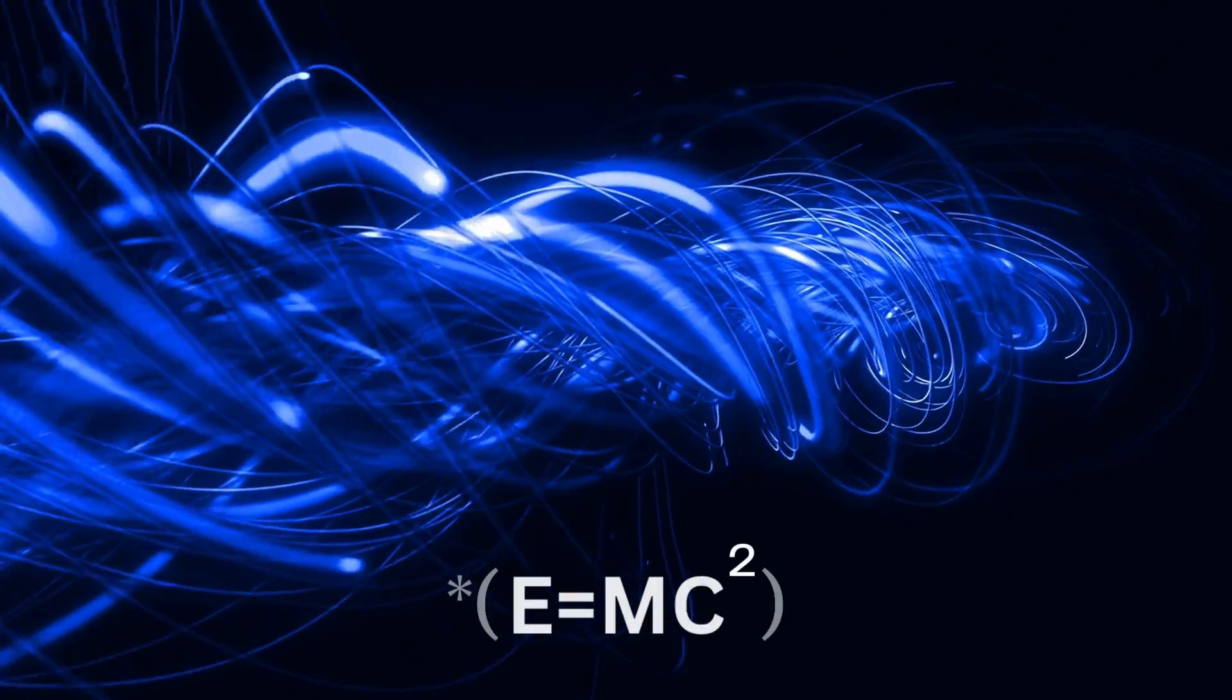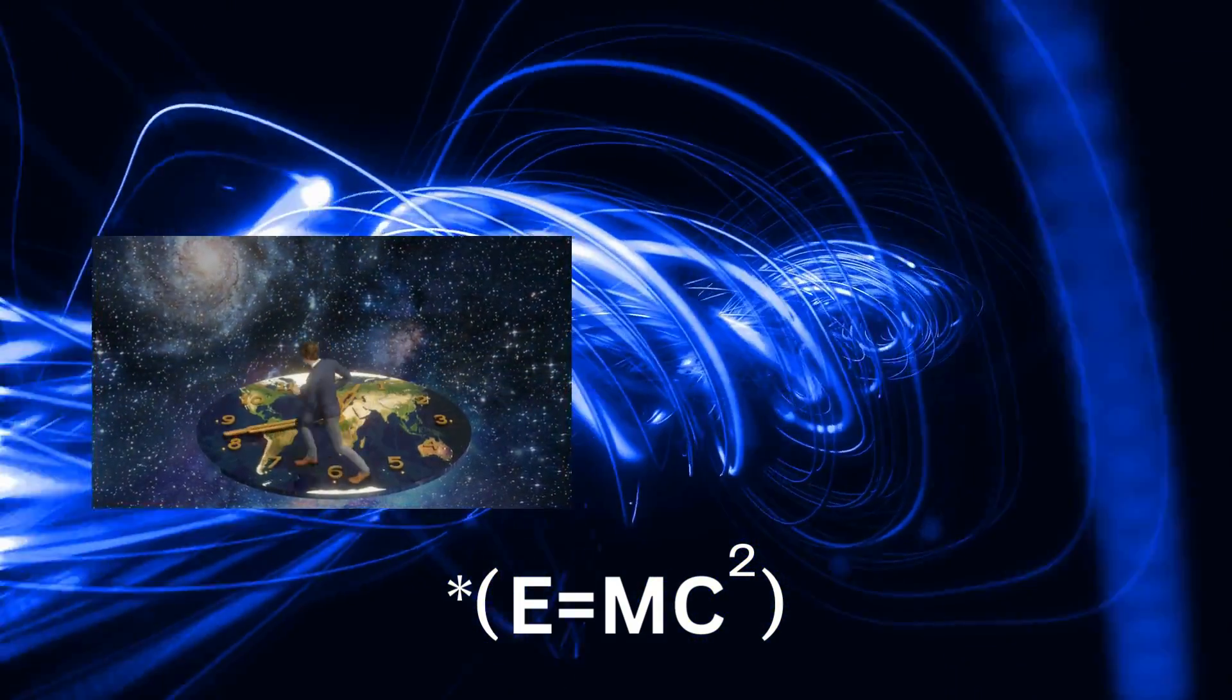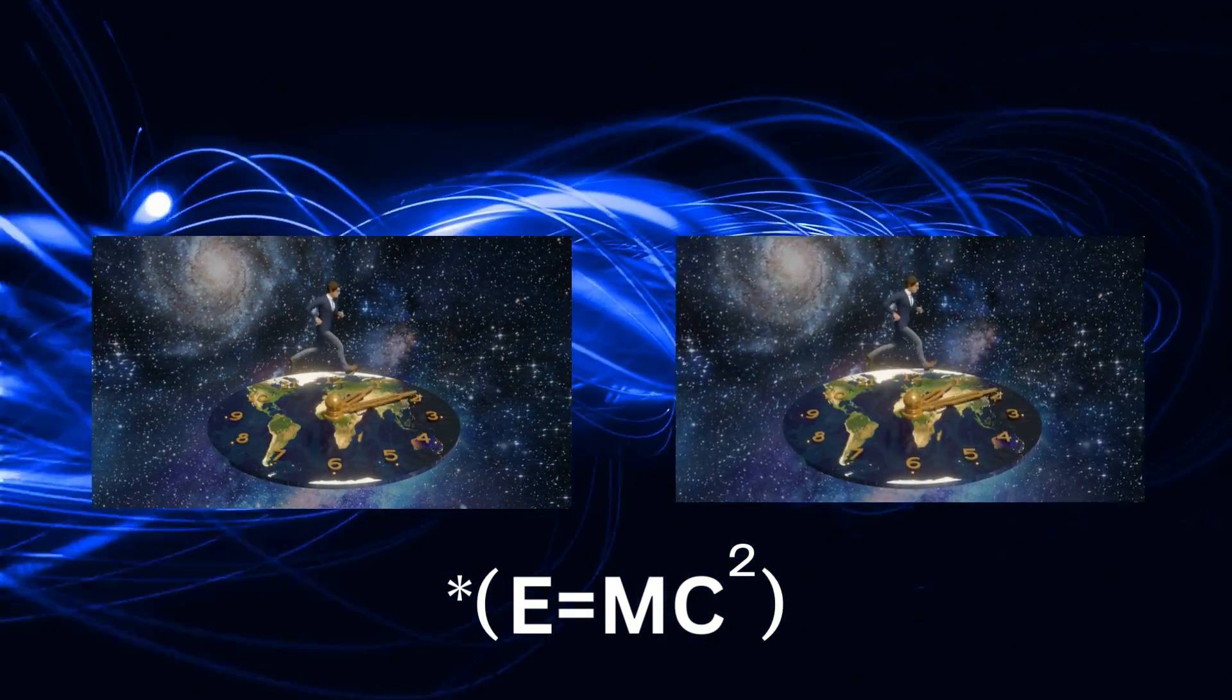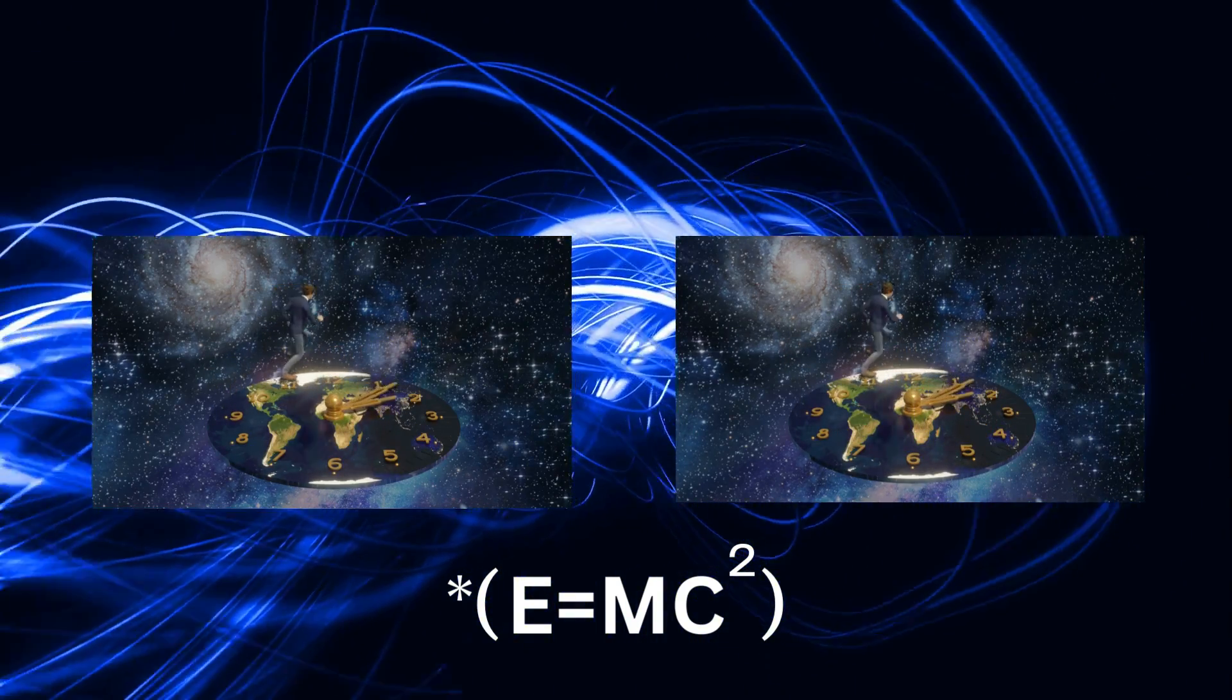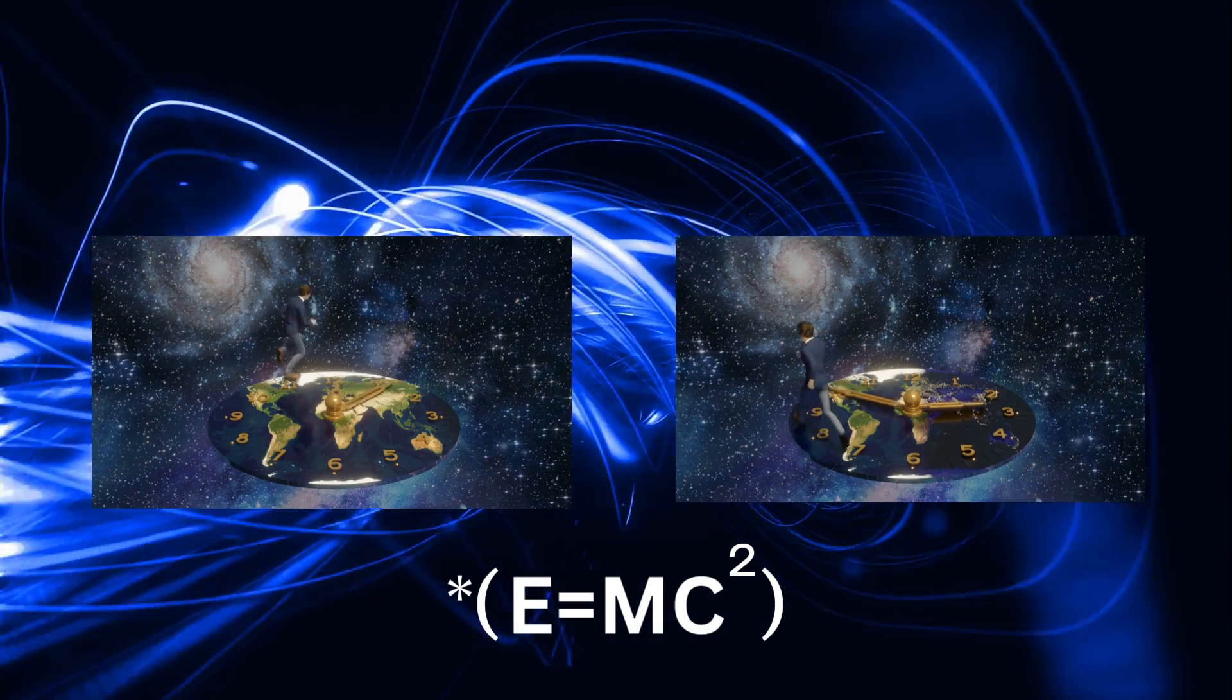Time is relative. Observers in motion relative to each other will measure different amounts of time for the same event. This is because time passes more slowly for objects that are moving at high speeds.